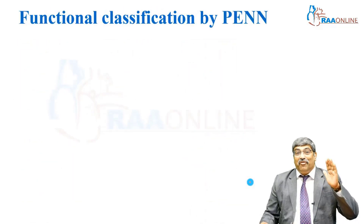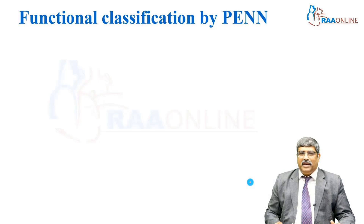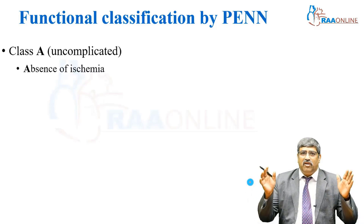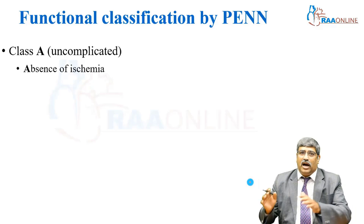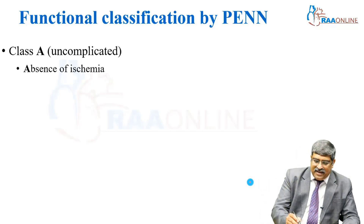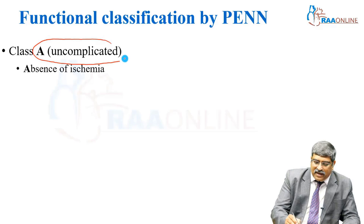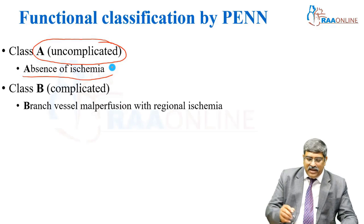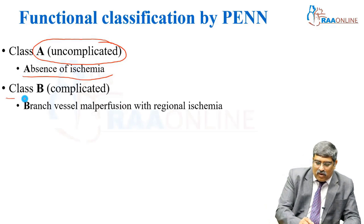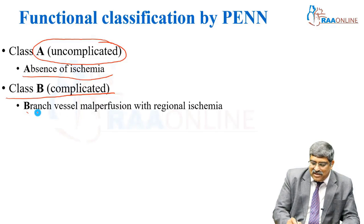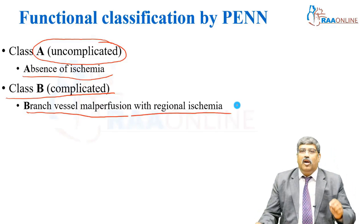Now, coming to the functional classification by Penn. Here, you look at the symptomatology or the presentation of aortic syndrome. Class A is uncomplicated, which means absence of any ischemia. Class B is called complicated — B is for branch vessel malperfusion.